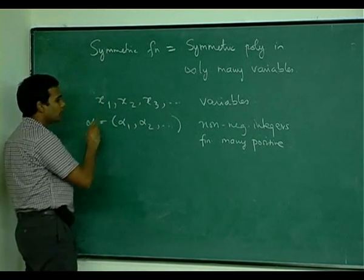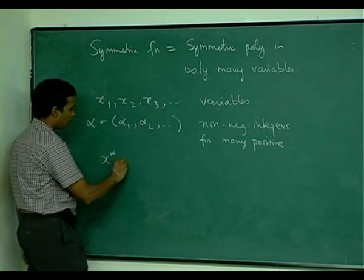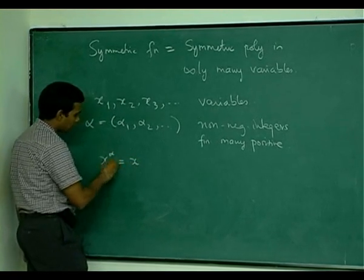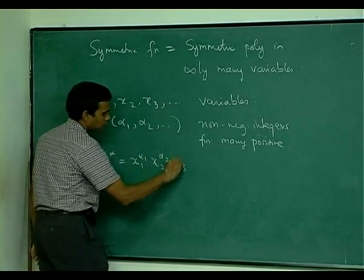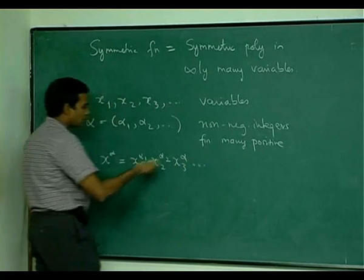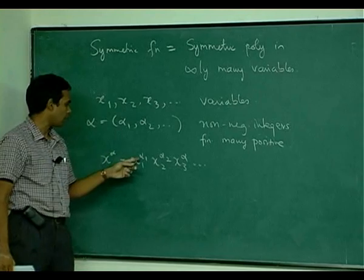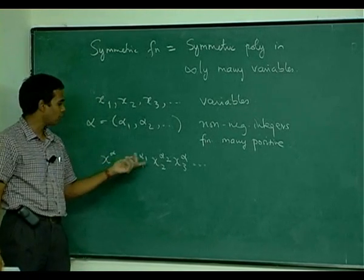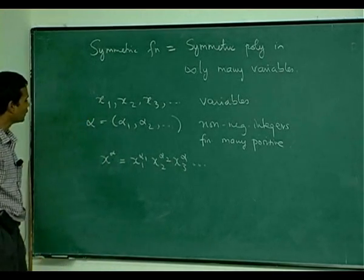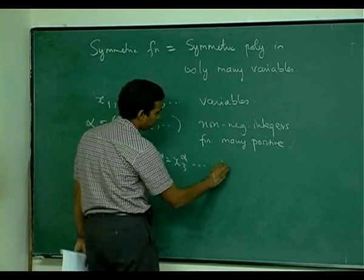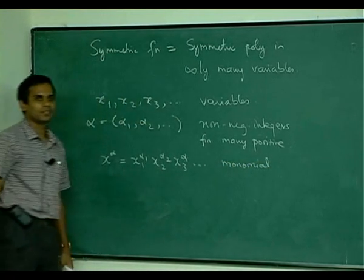Once you have these variables and this multi-index, you can write x to the alpha. This denotes x1 to the alpha_1, x2 to the alpha_2 — just a finite product because only finitely many of these alpha_i's are positive, and if alpha_i is 0 it does not contribute to the product. That is a monomial in infinitely many variables.